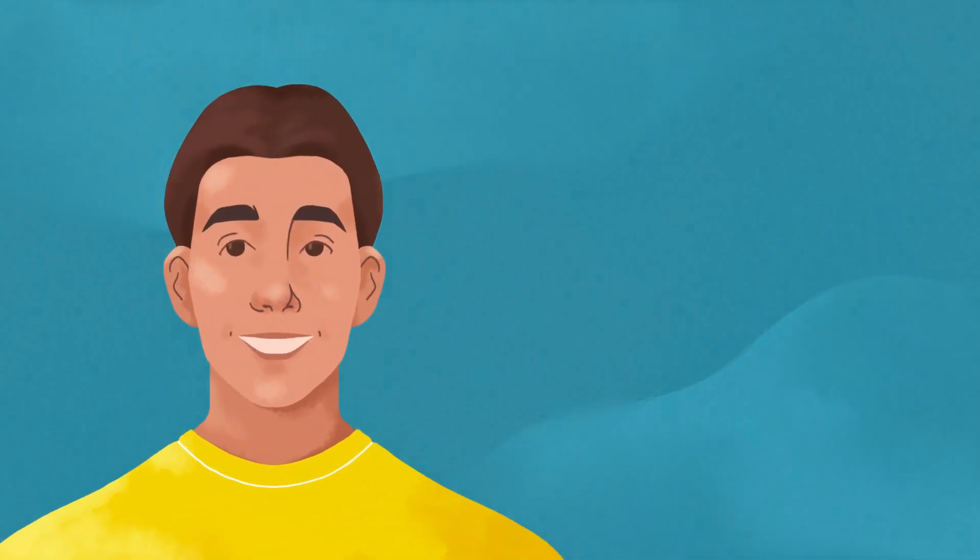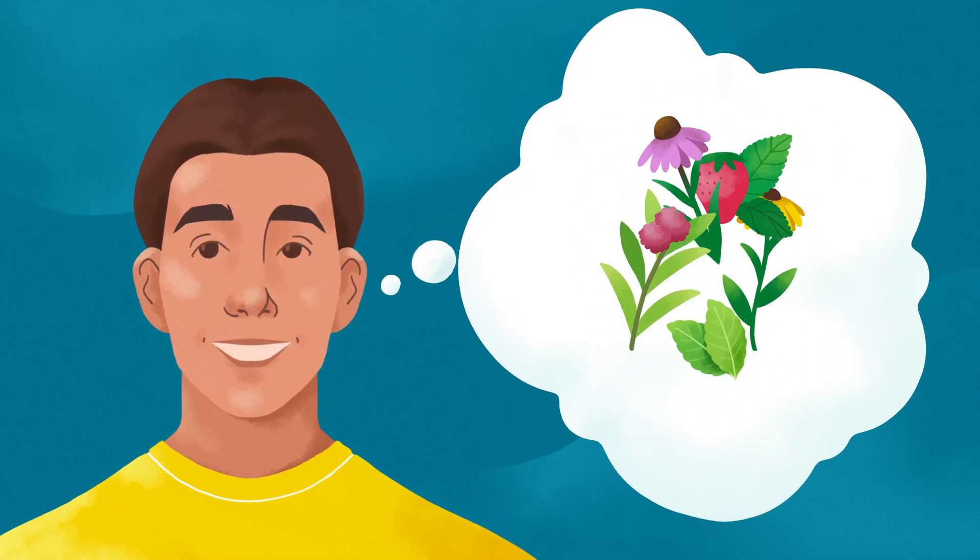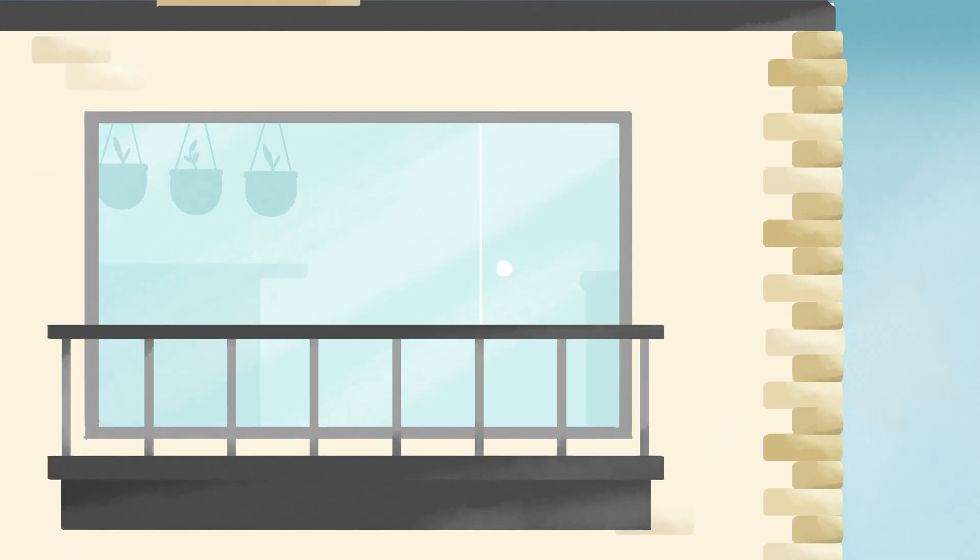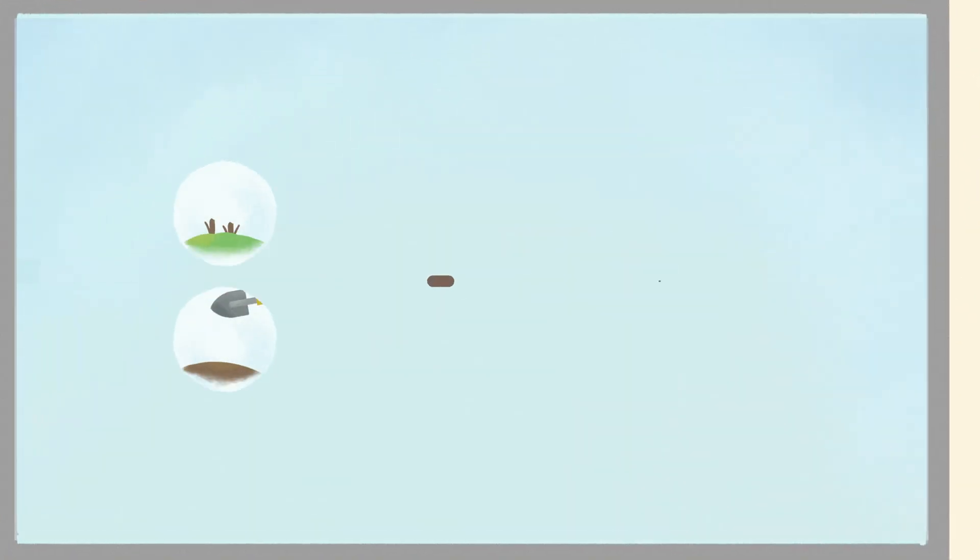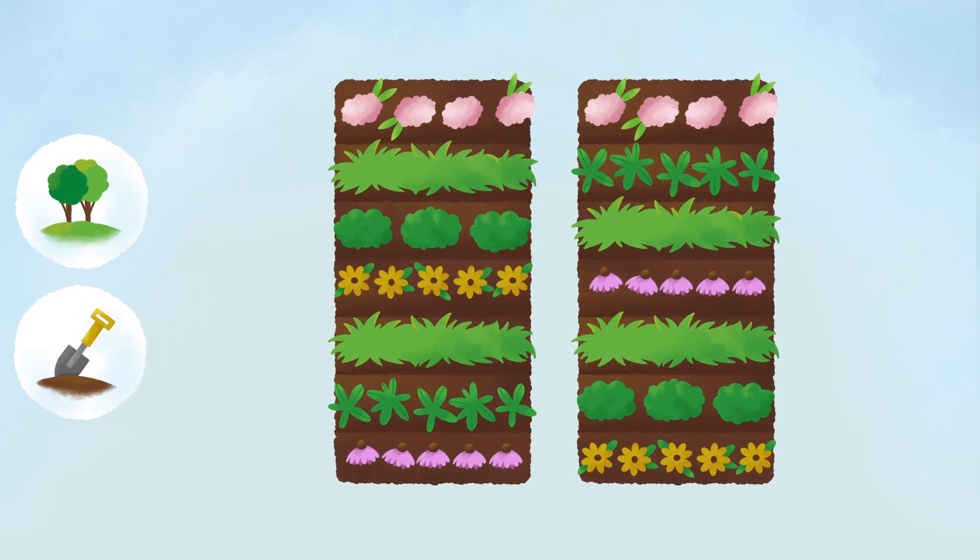Planting a seed garden begins with the first step, envisioning the possibilities. It's about finding an outdoor space at your home or in your community, preparing the soil, and choosing native plants that will thrive and contribute to the biodiversity of your surroundings.